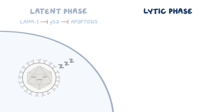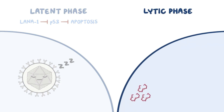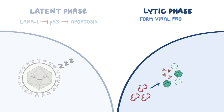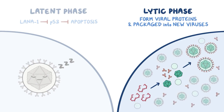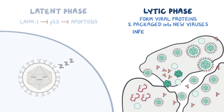In the lytic phase, the virus starts to replicate, so its DNA gets transcribed and translated by cellular enzymes in order to form viral proteins, which are packaged into new viruses. When the virus enters the lytic phase, thousands of virus particles can be made from a single cell, which can destroy the cell and subsequently infect neighboring cells.